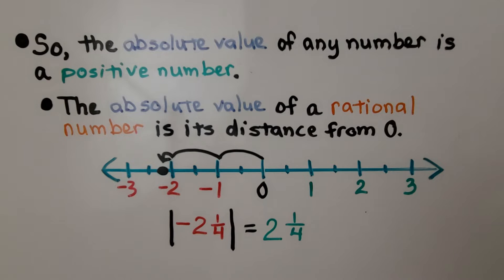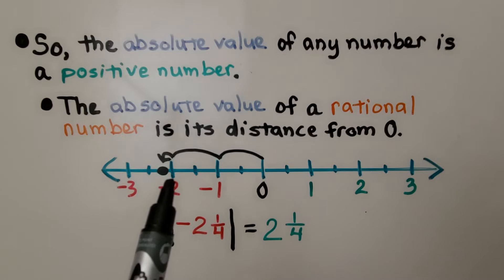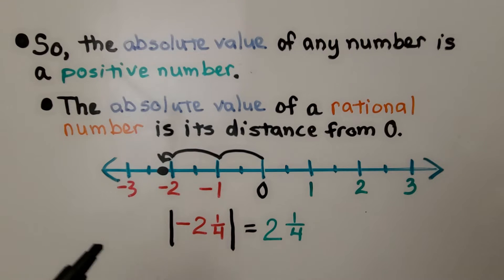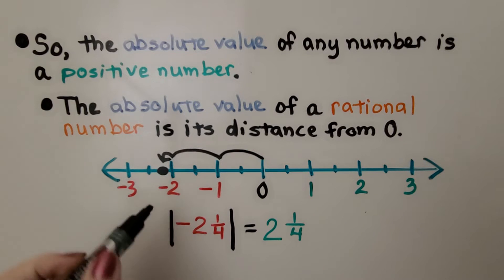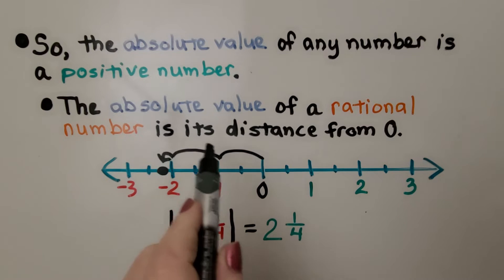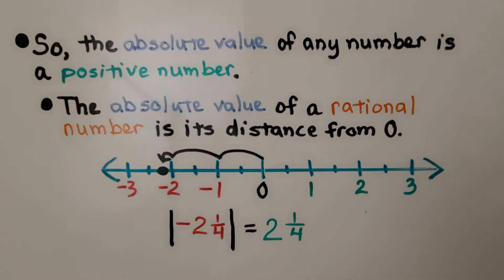The absolute value of a rational number is its distance from zero. The absolute value of negative two and one-fourth: it's going to be a little farther away from zero, but not quite half, so it's going to be closer to where two is. Counting one, two, and one-fourth jumps from zero, the absolute value of negative two and one-fourth is positive two and one-fourth.